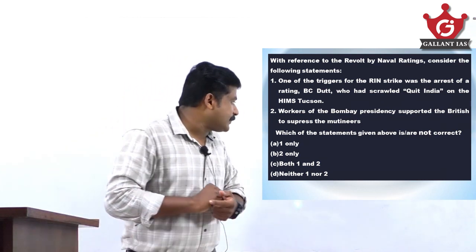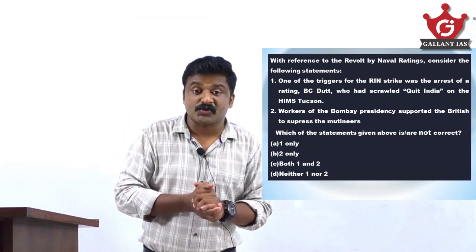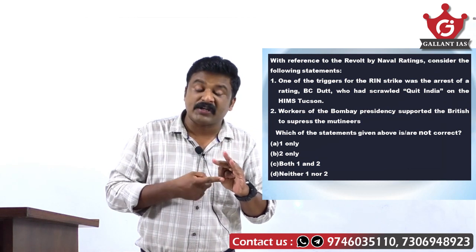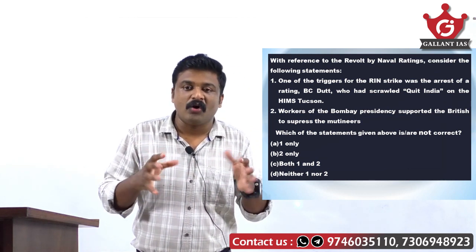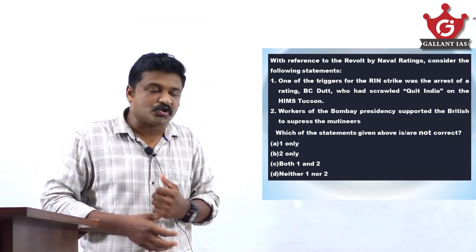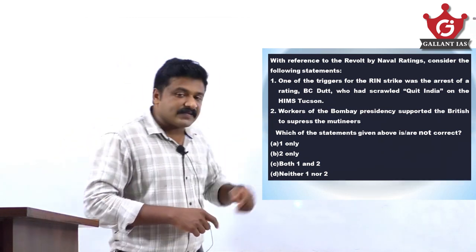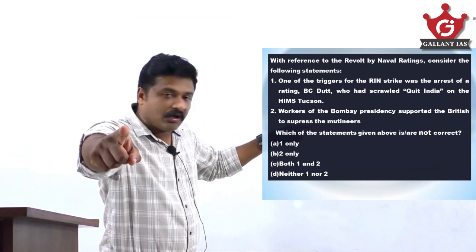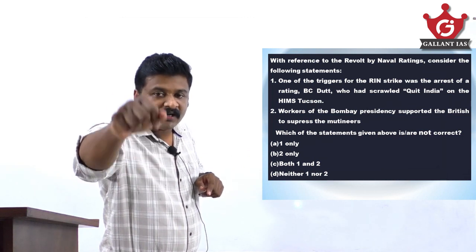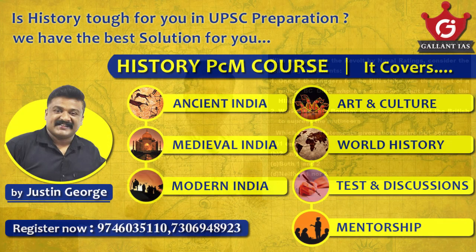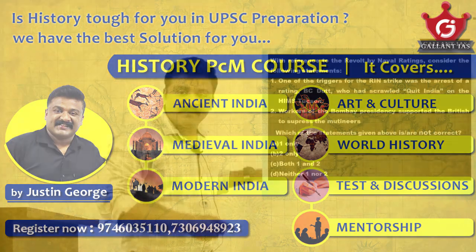Statement 2: workers of Bombay Presidency supported the British to suppress the mutineers. No. In fact, RIN Mutiny was the last nail on the coffin of British rule because the mutineers and ratings enjoyed the support of armed forces and Indian civilians. The British realized they had no base in India anymore, because even the armed forces were supporting the mutineers against the British. So both statements are not correct. The question asks for 'not correct' — many aspirants carelessly pick the correct statements instead. Avoid silly errors, as they prevent you from closing the cutoff. Your answer has to be C — both 1 and 2 only.